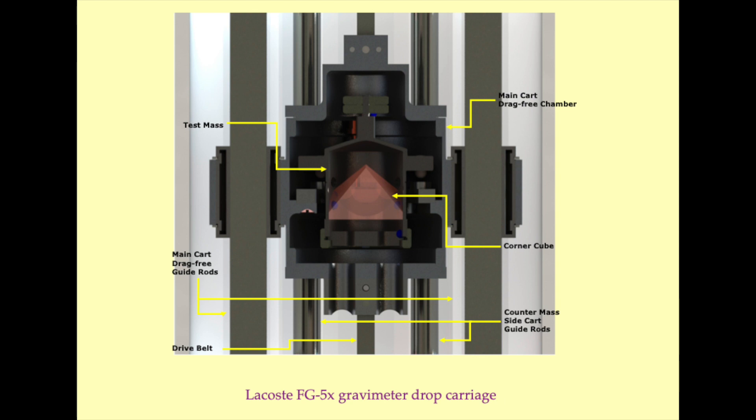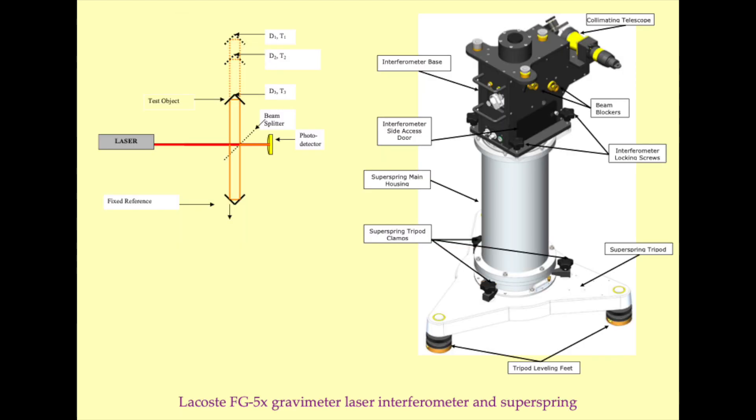Here we have a close-up of the drag-free cart and the test mass. I'm not going to go into too much detail about the construction and design of this particular module, but both of its components have undergone multiple refinements to improve their performance over the years. The key element of this component of the machine is the corner-cube reflector, which is the brown pyramidal structure in the center of the figure.